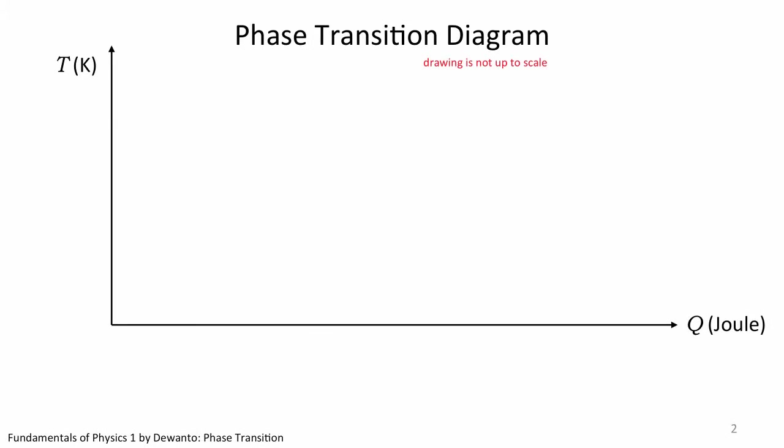What we are about to go through is called phase transition diagram. Since I only meant this for illustration—that is to say I only want us to appreciate the typical trend or characteristic in a phase transition diagram of certain matter—I will not draw this diagram up to scale. I will use H2O as an example in this illustration since we are all very familiar with ice, water, and steam.